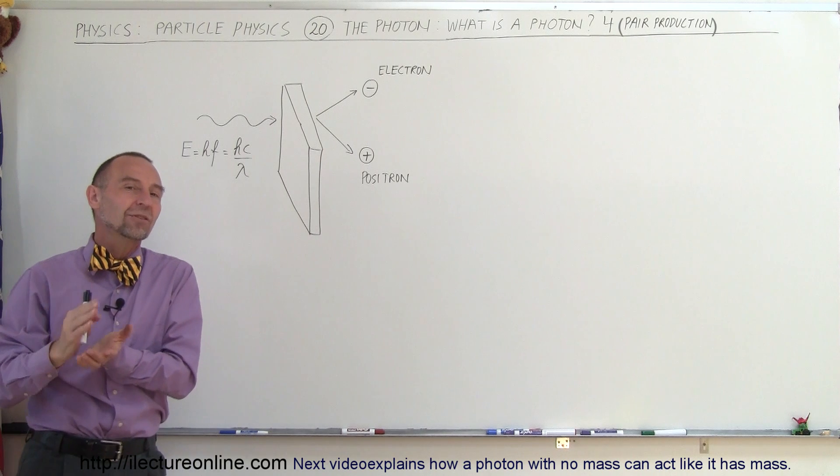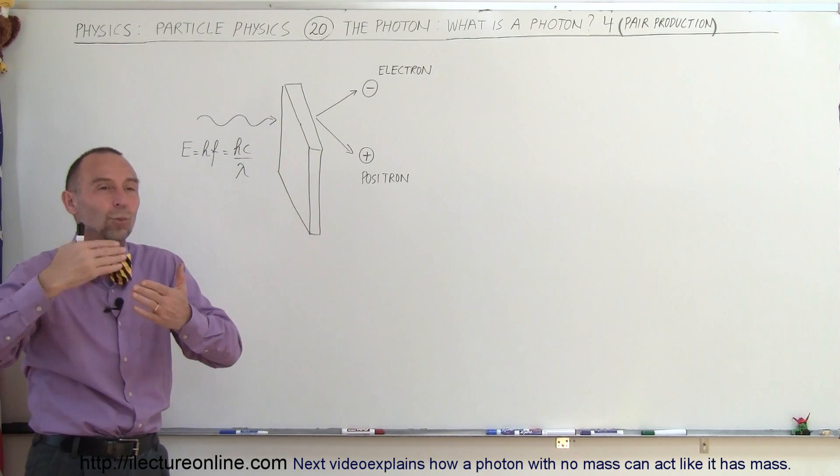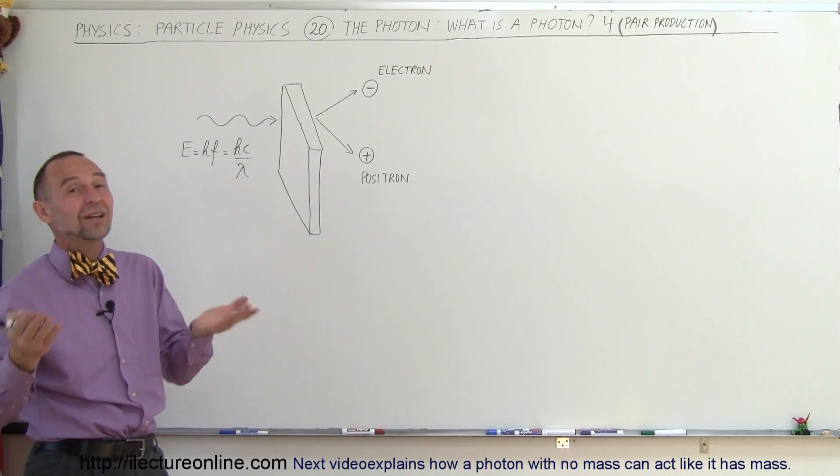Now what's the difference between an electron and a positron? Well, it turns out they are identical in all respects, except one has a negative charge and the other one has a positive charge.